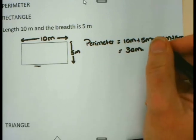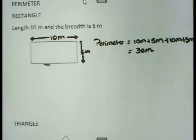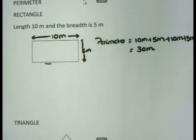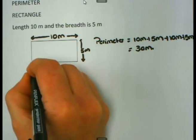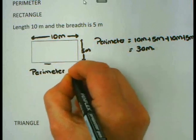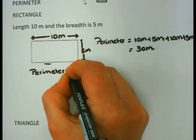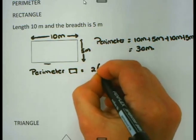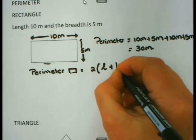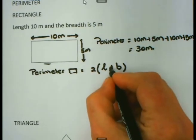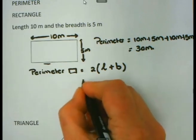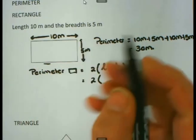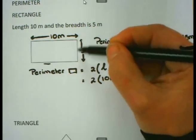In principle, this is what we do when we calculate the perimeter. But we usually find on the question papers a formula. The formula that we use for the perimeter of a rectangle is as follows: for a rectangle, if we want to calculate the perimeter, we say 2 times length plus breadth. Very important — 2 times, and in the bracket we use length plus breadth. So if I substitute now, I know that my length is 10 meter and my breadth is 5 meter.